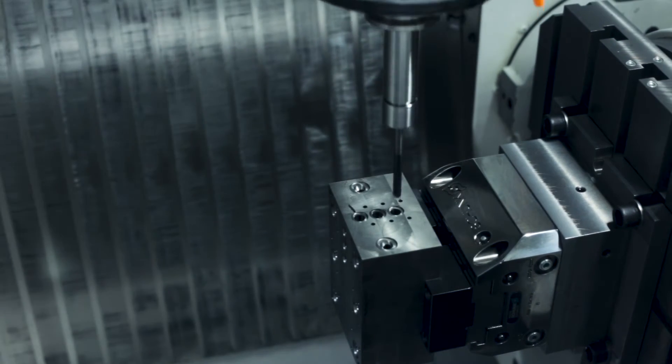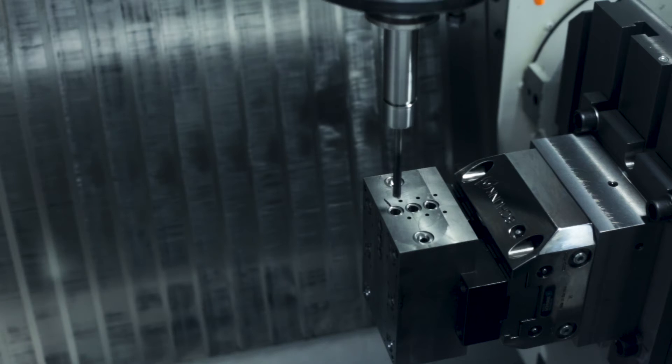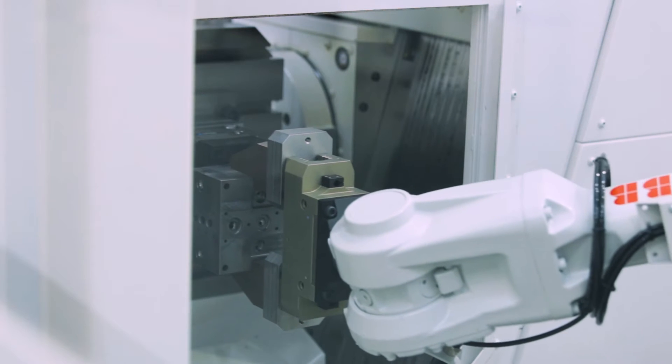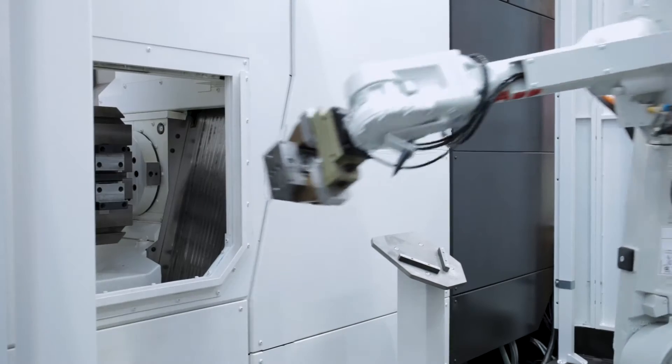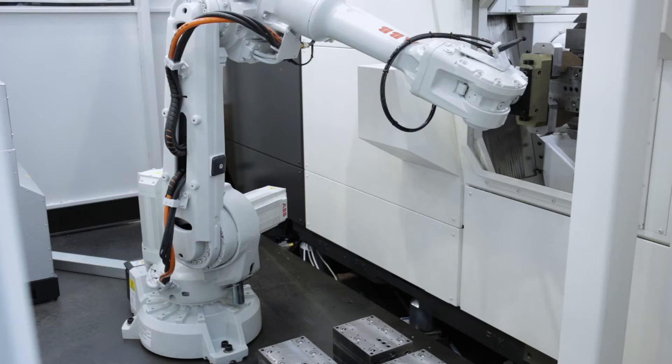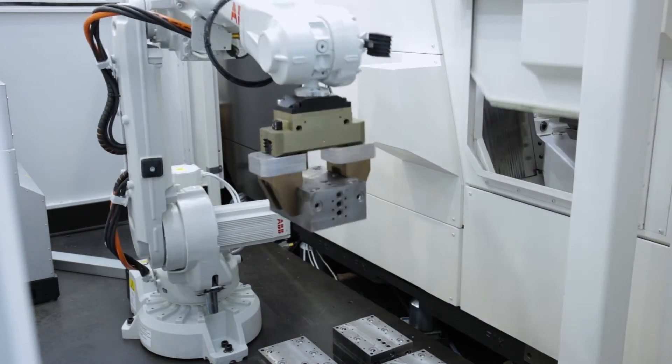The important part is that this machine is capable to hand over the part from one machine to the next machine. To feed the machines we use robots from ABB in this case. So we have one on the feed-in side and one on the side where we take out the parts.